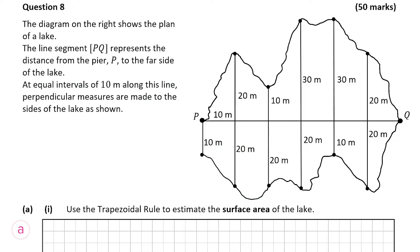Starting with question 8a — in question 8 we're given a diagram of a plan of a lake and we're told that the line segment PQ is the distance from the pier P to the far side of the lake. There are equal intervals of 10 meters made along the line and then perpendicular measures made to the sides of the lake, as shown in the diagram.